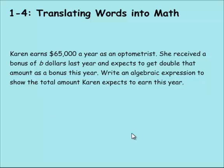Let's do a word problem. Karen earned $65,000 a year as an optometrist. She received a bonus of B dollars last year and expects to get double that amount as a bonus this year. Write an algebraic expression to show the total amount Karen expects to earn this year.